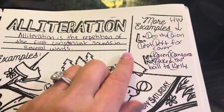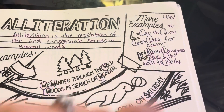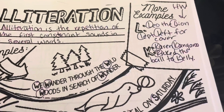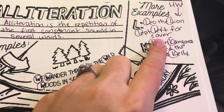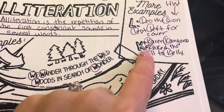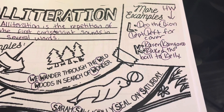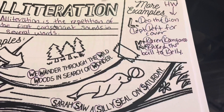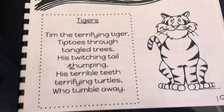Over here it challenges us to create an example. I give this to myself as homework because I am not happy with my examples — but you can come up with your own or use mine if you want. For L, I wrote 'Leo the lion left for cover.' Down here I have 'Karen kangaroo kicked the ball to Kelly.' I can't wait to hear what you guys have come up with — I bet they're really creative.